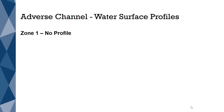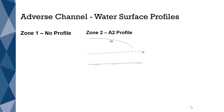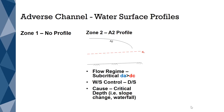The fifth and final channel type is an adverse channel. An adverse channel has a negative slope, which results in an inability to calculate the normal depth. If you are unable to calculate a normal depth, no profiles can be formed in Zone 1. An A2 profile is formed in Zone 2, where the flow regime is subcritical. A subcritical flow condition occurs when the actual depth is greater than the critical depth. Flows that are subcritical are always controlled downstream. For an A2 profile to occur, there needs to be critical depth control at the downstream location. This will occur when there is a slope change or a waterfall.